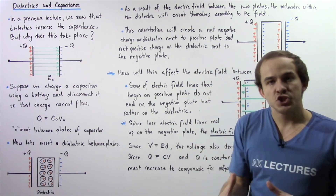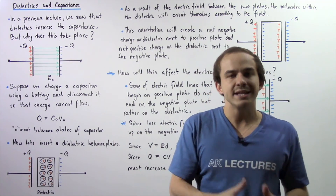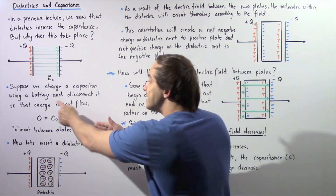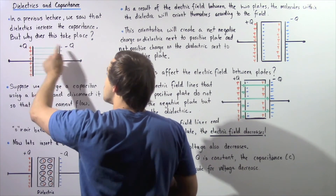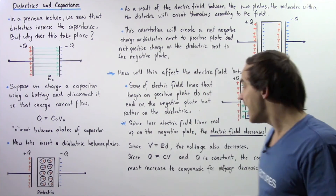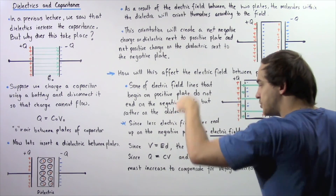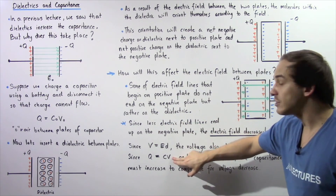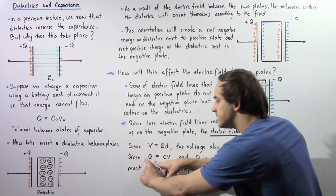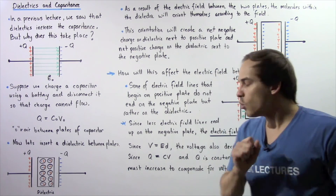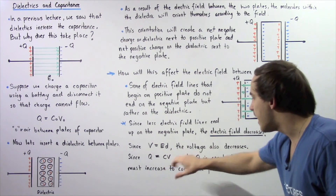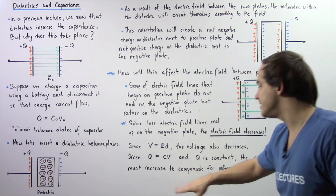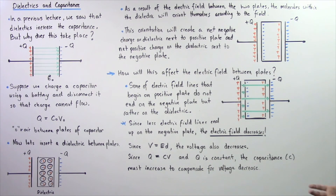Now, because the quantity of charge stored on either one of the plates is equal to the product of the capacitance and the voltage, and because we disconnected our battery so our quantity of charge on either one of these plates remains constant, we see that because our voltage decreases, the capacitance must increase to compensate for that loss in voltage so that our quantity of charge remains constant. Since Q = C × V and Q is constant, C must increase to compensate for that voltage decrease.